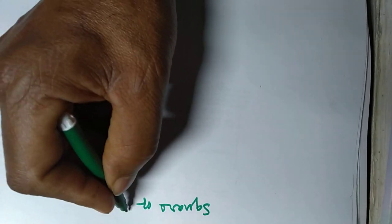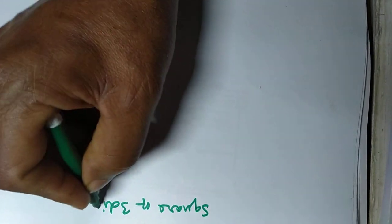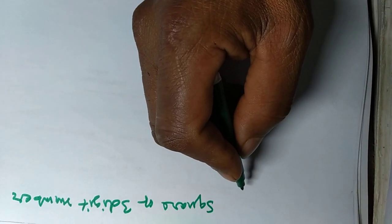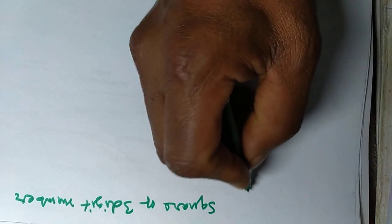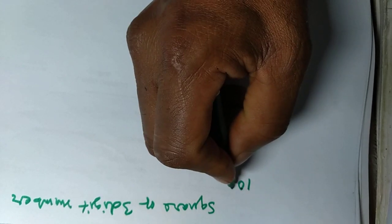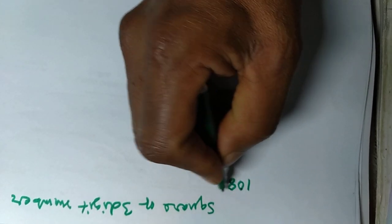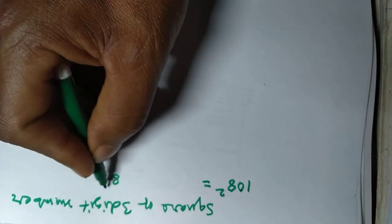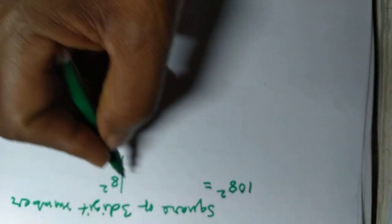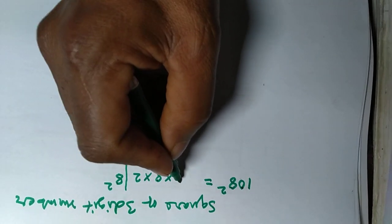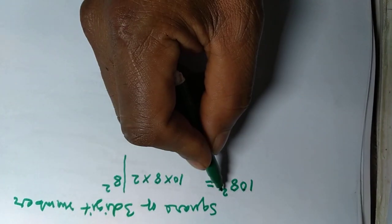Now, a square of a three-digit number. How can you do it? Suppose the number is 108 squared. So you take 8 squared and 2 into 8 into 10. This is 2, this is...